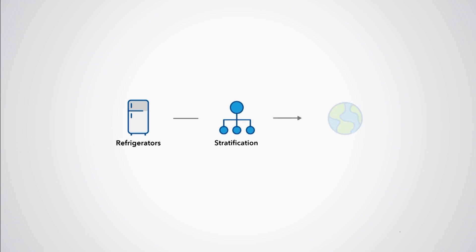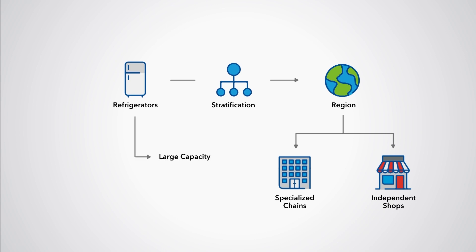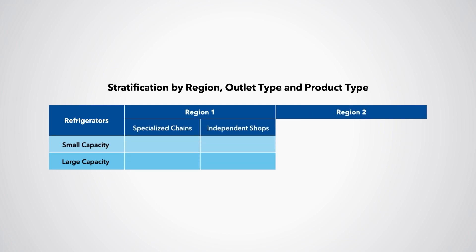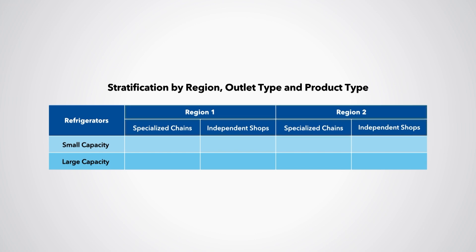For example, suppose that the CPI classification contains the item refrigerators that can be stratified by region. In a given region, refrigerators are primarily sold in larger, specialized chain stores and in several small, independent shops. Refrigerators also can be classified according to their capacity. A sample stratification structure for this example is illustrated in the table here. Within each cell, prices can be sampled using a two-stage approach. In the first step, specialized chains and independent shops that sell refrigerators are selected within the different regions. In the second step, specific refrigerator models that meet the product type specifications are then identified for continuous pricing within the selected outlets.